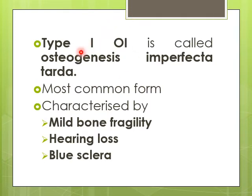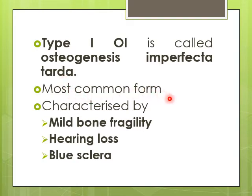OI type 1, also called osteogenesis imperfecta tarda, is the most common form of OI. Its clinical features include mild bone fragility, loss of hearing, and blue sclera.